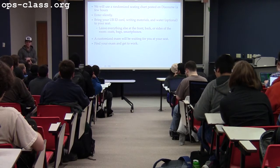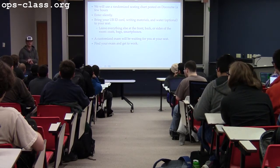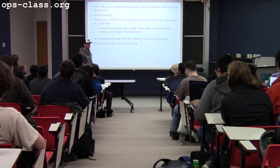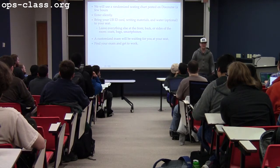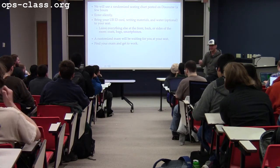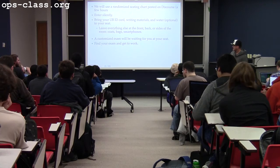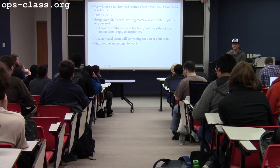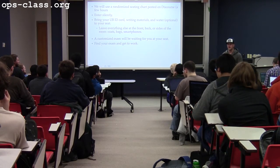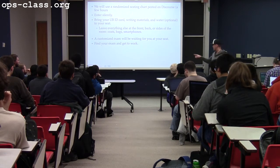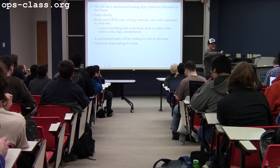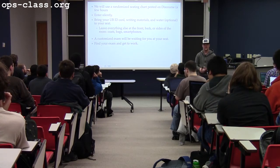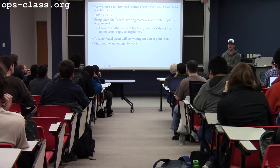Things you need: you need a UBID card. This sometimes has surprised students — yes, you in fact need a working UBID card. If you don't have one, you have tomorrow to visit the ID card office and obtain a UBID card. You also need writing materials and water if you need it, and that's what you should have at your seat. Everything else — coats, backpacks, stuff like that — can go up in the hallways along the sides or in the back.